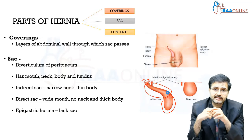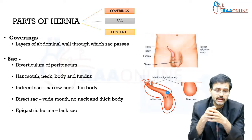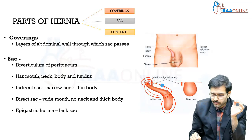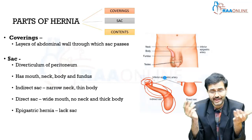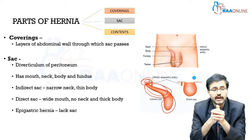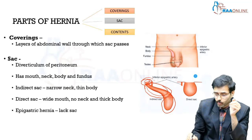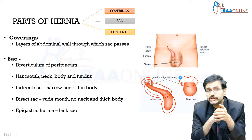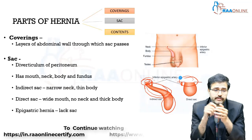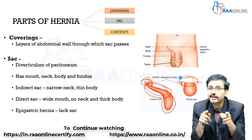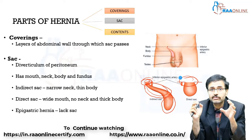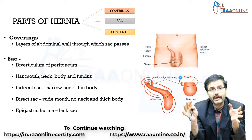In an indirect inguinal hernia, the sac has a narrow neck and a thin body, whereas the fundus may vary. A direct hernia usually has a wide mouth, no neck, and a thick body. An epigastric hernia, on the other hand, has no sac at all — it just contains a pre-peritoneal pad of fat.